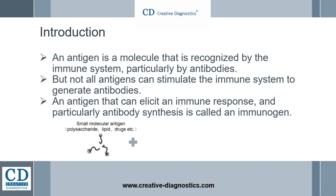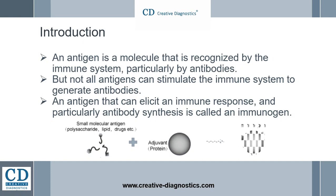These low molecular weight substances are called haptens, and must be chemically coupled to larger carrier molecules, such as bovine serum albumin or keyhole-limpet hemocyanin, in order to elicit specific antibody formation.